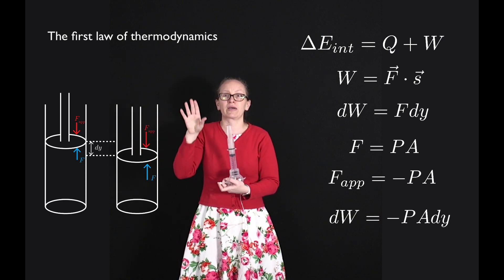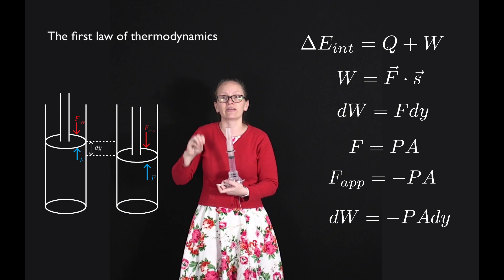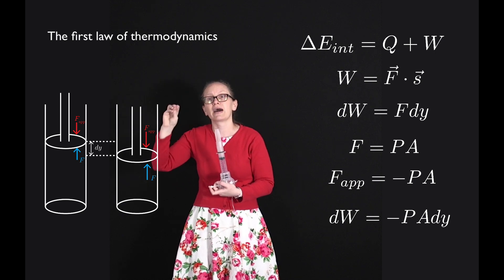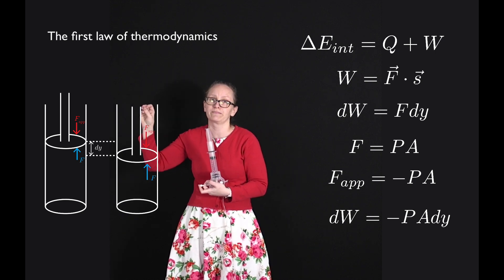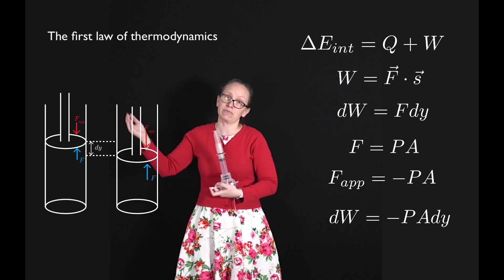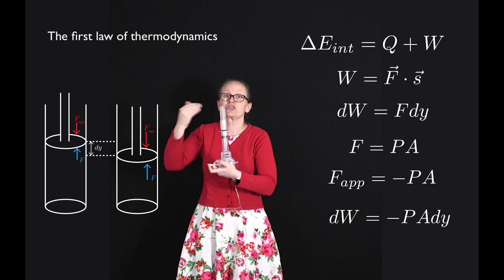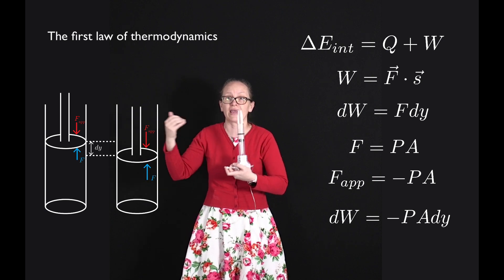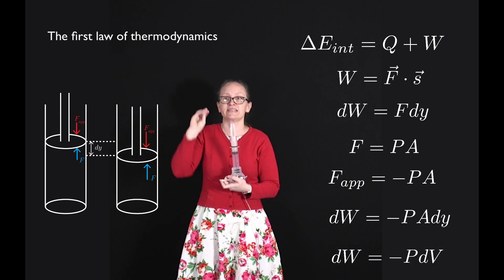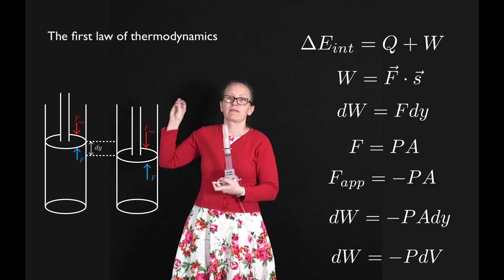So going back to my equation for dW, I've then got that dW is equal to minus PA dy. And A times dy, well that's the cross-sectional area times the change in height, which is just the change in volume of my gas. So I can write dW is equal to minus P dV.